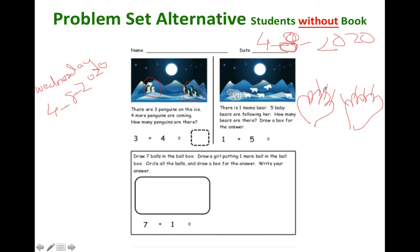Four, five, six, seven. So I have total of seven penguins. Just to make sure I get it correct, I can count the penguins. One, two, three, four, five, six, seven. So total of seven penguins and I want you to do this one and this one by yourself.